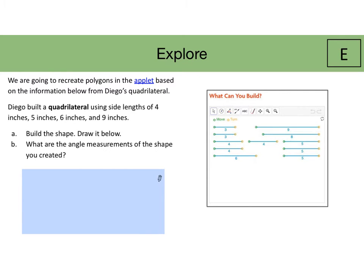Now students have experience with the applet and now they're going to listen to directions. They are told that Diego is building a quadrilateral with side lengths of four inches, five inches, six inches and nine inches. Students need to build the shape and draw it below. What are the angle measurements of the shape you have created? This is a time to remind students that a quadrilateral has four angles. And so their answer for part B needs four different angle measurements or rather four angle measurements. Additionally, you might want to make a mini checklist for students that way they can include all the portions that they need. So they need one four, they need one five inch, they need one six inch and they need one nine inch.